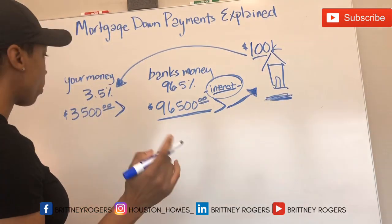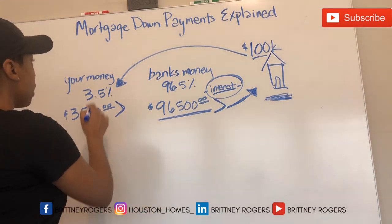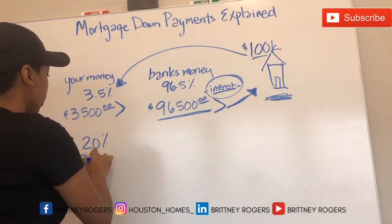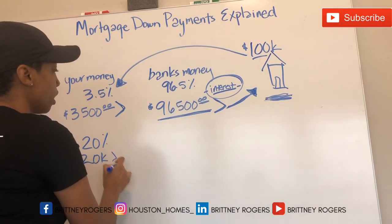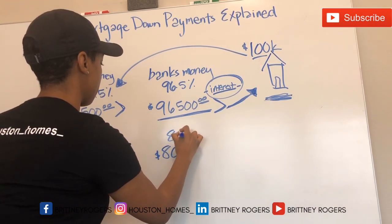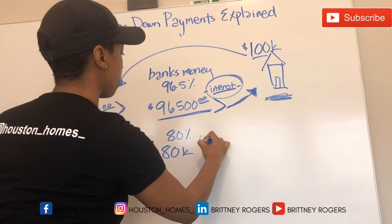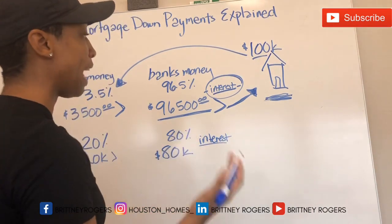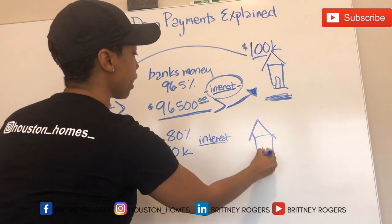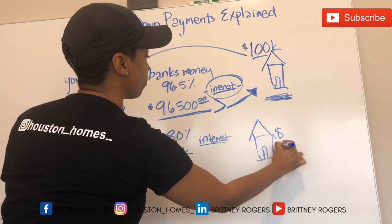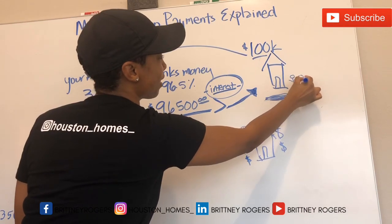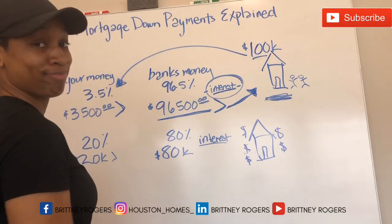If this was an investment property and you had to put a larger down payment down — for example, you put 20% down because it's an investment property — then that's $20,000 you put down of your money, and then the bank puts the other $80,000. You're going to pay them interest for allowing you to use their money, but you own the asset. Ideally, this is a cash flow generating asset and it's spitting out money. That's how down payments work.